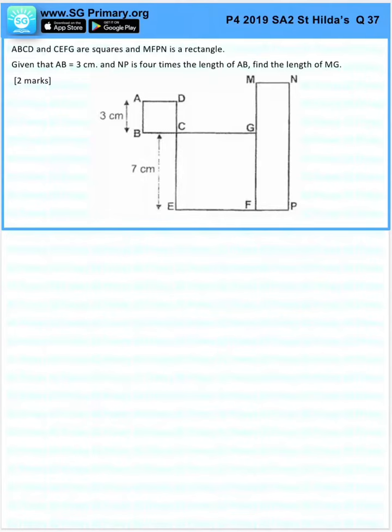Given that AB equals 3 cm and NP is 4 times the length of AB. So let's draw that out.